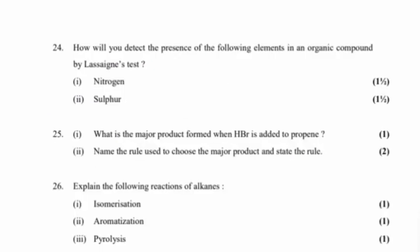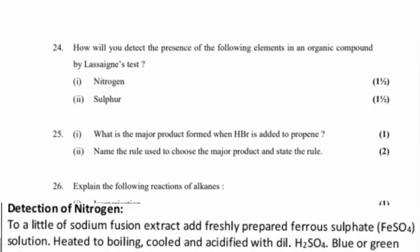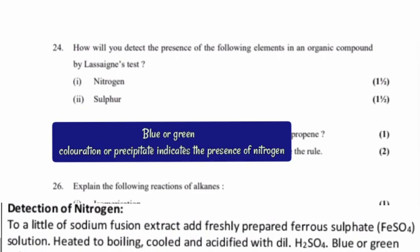Question 24: How will you detect the presence of the following elements in an organic compound by Lassaigne's test? Part 1: Nitrogen. Answer: To a little of sodium fusion extract, add freshly prepared ferrous sulphate solution, heated to boiling, cooled and acidified with dilute H2SO4. Blue or green coloration or precipitate indicates the presence of nitrogen.